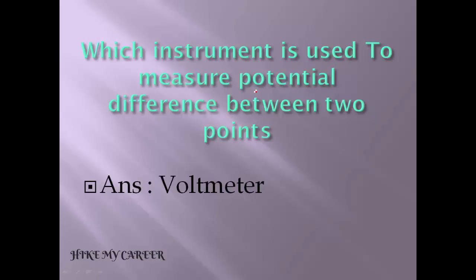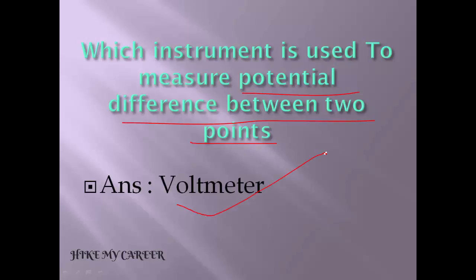Which instrument is used to measure potential difference between two points? Potential difference between two points means voltmeter. Voltmeter is used to measure potential difference between two points.